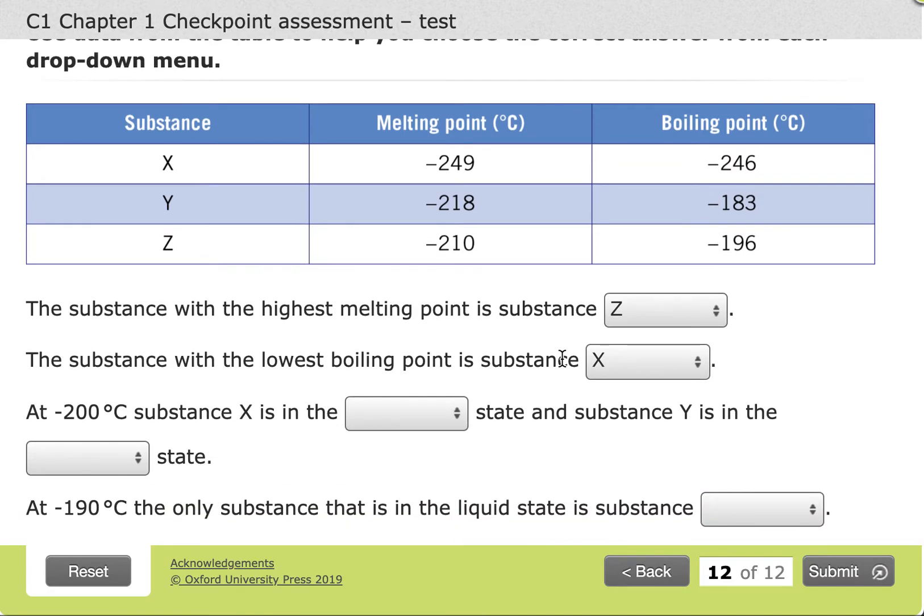At minus 200 degrees, substance X is in a particular state. Now let's have a look. If we want to know the state, all we do is think, where does the minus 200 degrees Celsius fit in our scale? If we're looking at substance X, minus 249, minus 246, 200 would be on the right-hand side of this.